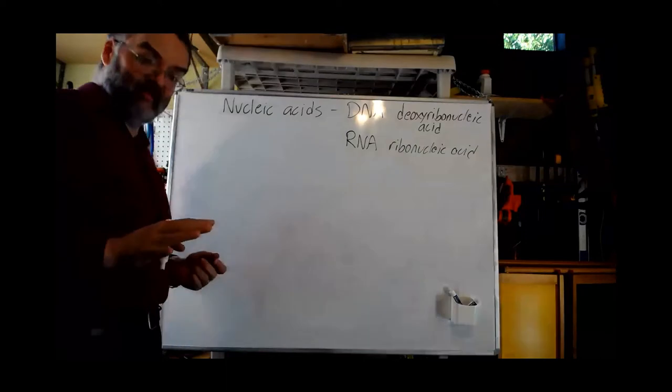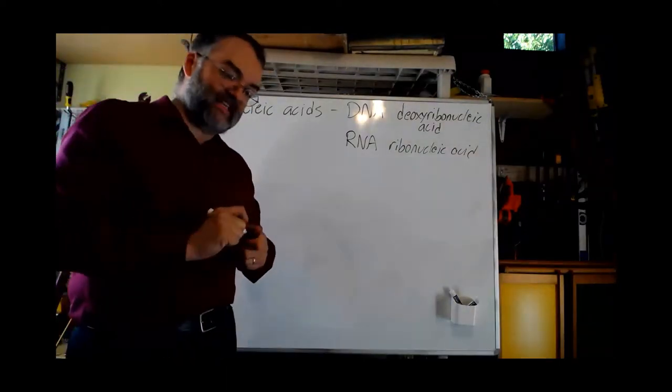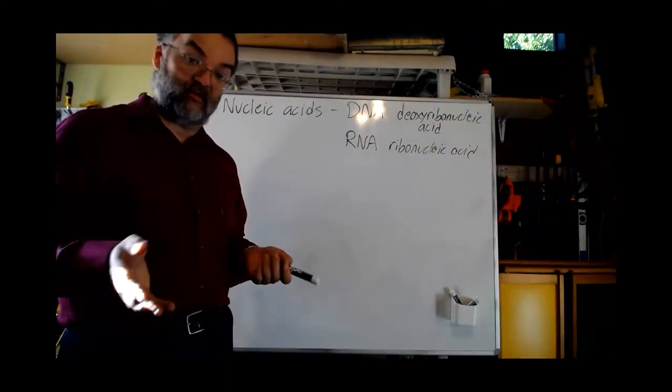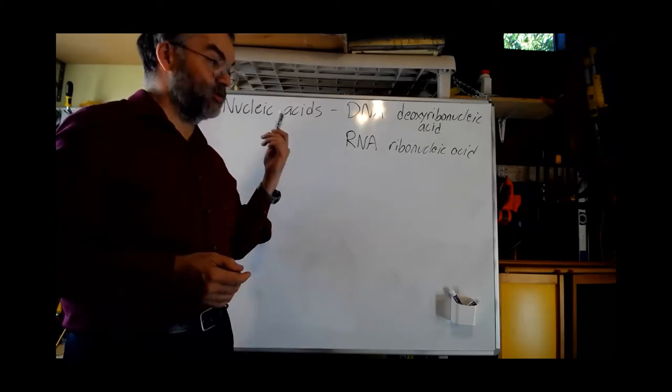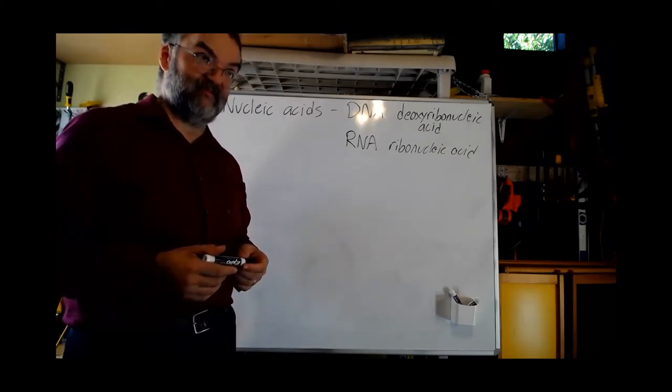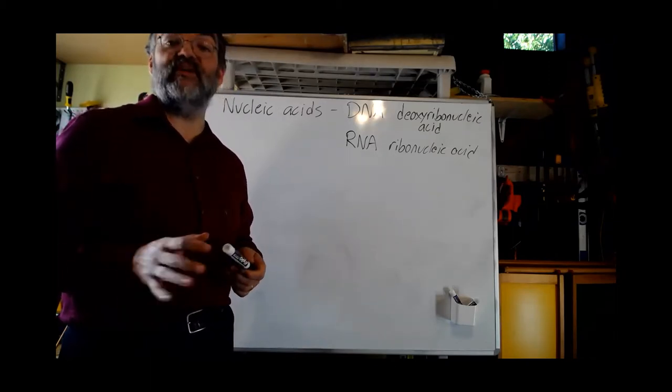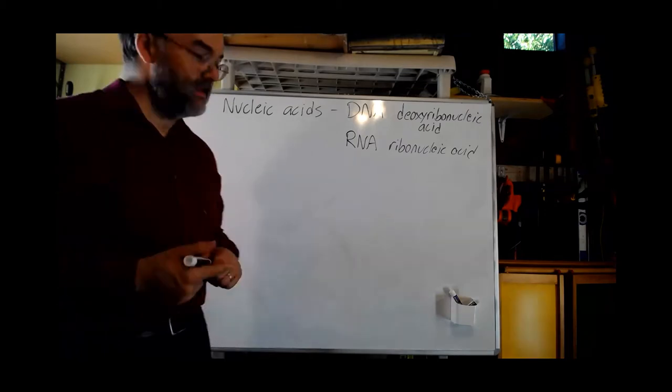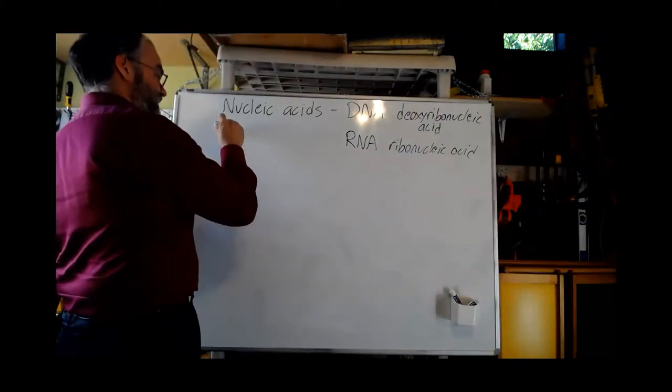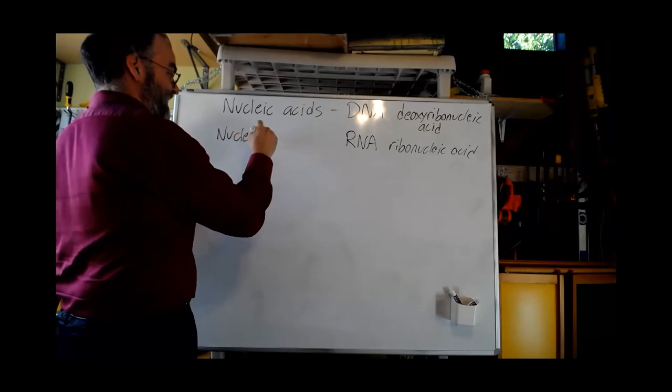So these are also polymers. Whereas proteins can be anywhere from dozens to thousands of amino acids long, nucleic acids can be significantly bigger. Hundreds of millions of monomers long. Their monomer is the idea of a nucleotide.